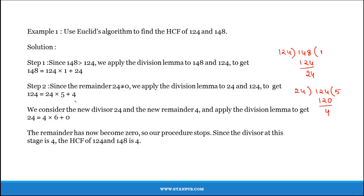Now, again since the remainder 4 is not equal to 0, we apply the division lemma to the new divisor 24 and the remainder 4. So, now we need to divide 24 with 4.